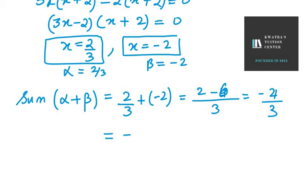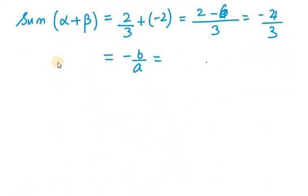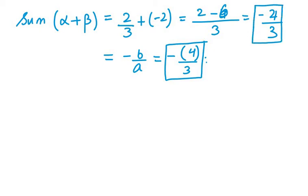So using the equation, we have b in this case is 4 and a in this case is 3, so it will be -b/a = -4/3. You can see that this term is equivalent to this term, so sum of zeros are verified here.